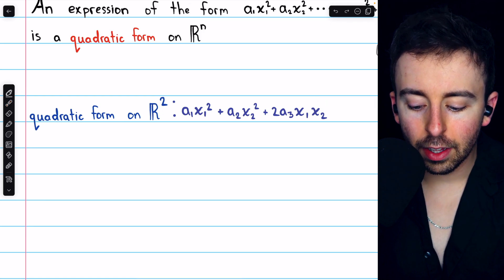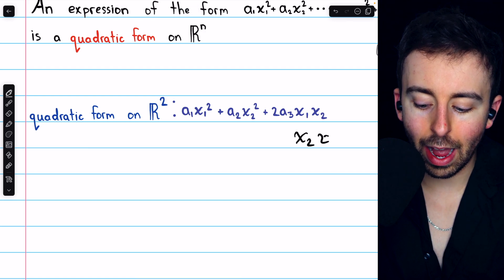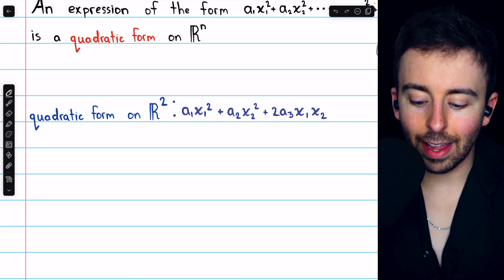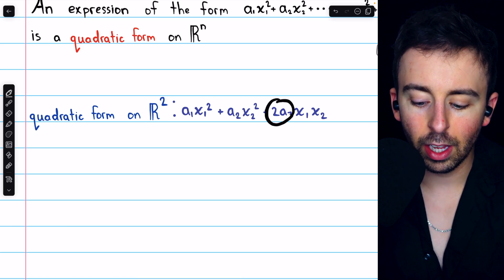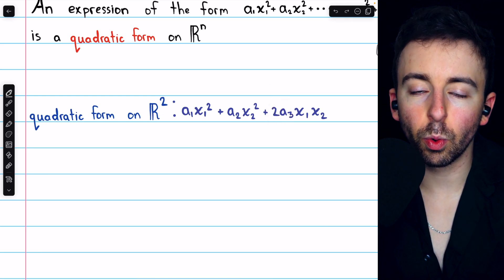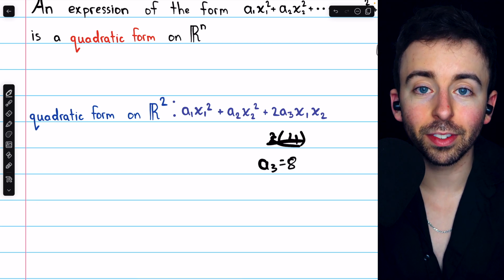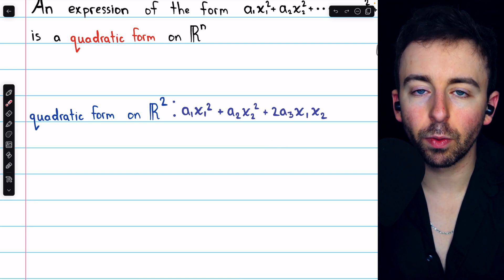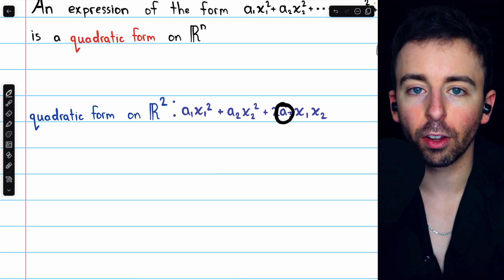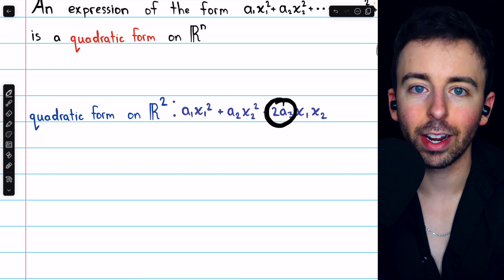Let's address this factor of 2. The reason there's a 2 is because, in theory, there are two cross-product terms: x1x2 and x2x1. But then we add them together and get 2a3x1x2. You might ask: if 2 times a3 is the coefficient, why not just call that whole coefficient a3? The reason will become apparent when we write this in matrix form. In matrix form, it's actually more advantageous to give a name to half the coefficient of each cross-product term.